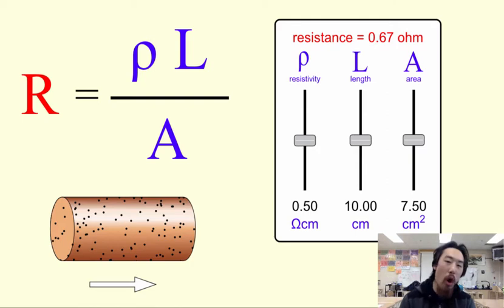Now the resistance formula is capital R equals rho. Rho is this funny-looking Greek letter which looks a lot like P, times capital L which stands for the length.